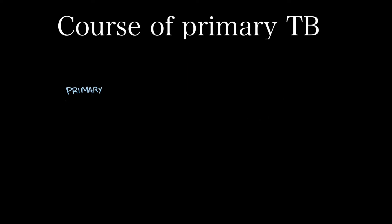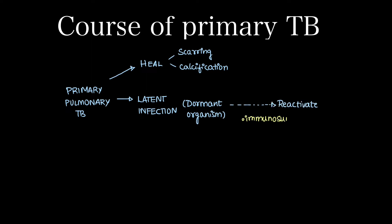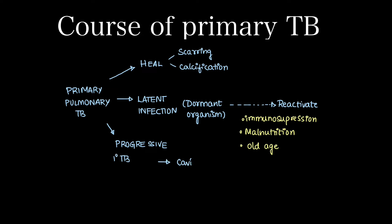What is the course of primary TB? Primary pulmonary TB can heal with scarring or with calcification. It can lead to latent infection by the dormant organism and can reactivate in future in conditions like immunosuppression, malnutrition, or old age. It can also progress to form progressive primary TB, which can show cavitation or miliary nodules.